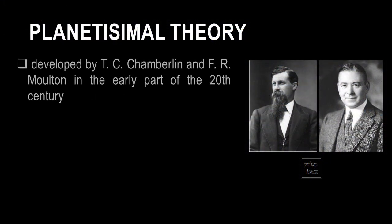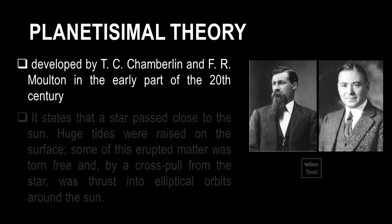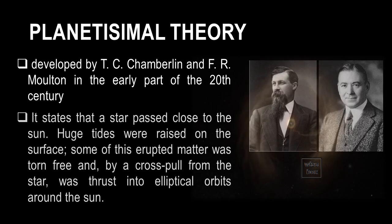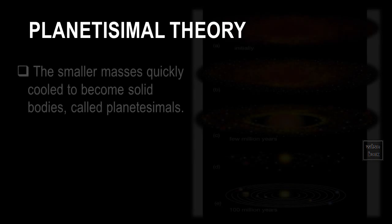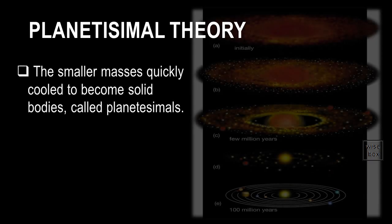The planetesimal theory was developed by T.C. Chamberlain and F.R. Moulton in the early part of the 20th century. It states that a star passed close to the Sun. Huge tides were raised on the surface. Some of this erupted matter was torn free, and by a cross-pull from the star, was thrust into elliptical orbits around the Sun. Then the smaller masses quickly cooled to become solid bodies, called planetesimals.